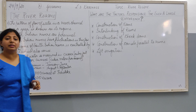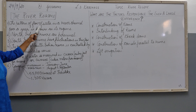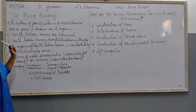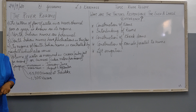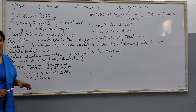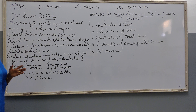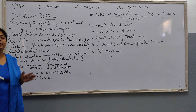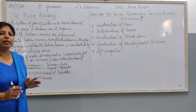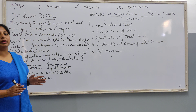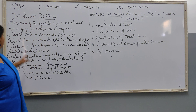Now, what is a river regime? The pattern of flow of water in a river channel over a year is known as its regime. That means whatever amount of water is flowing in a river in a year will be known as the river regime.